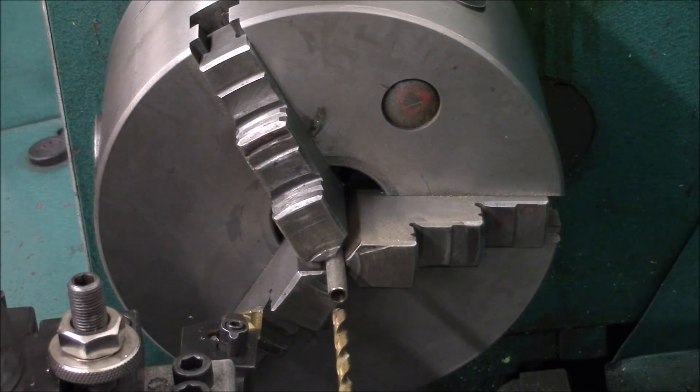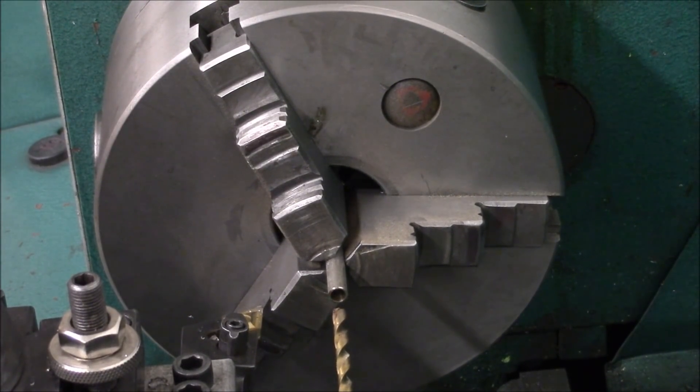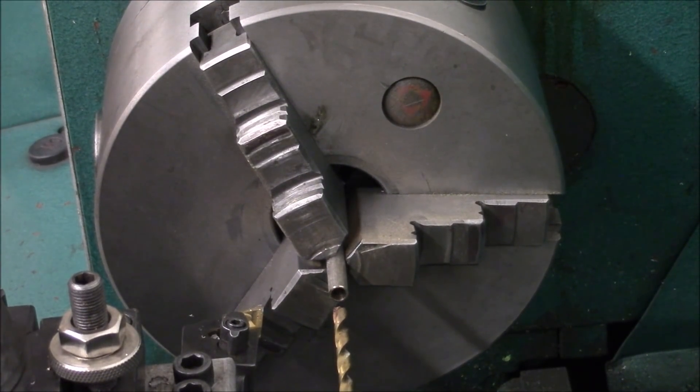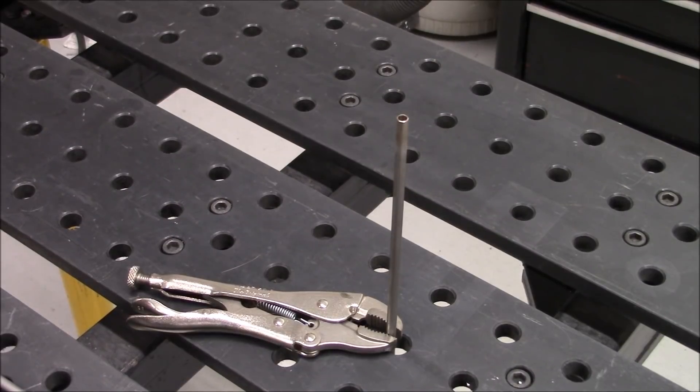You can see we got our hole in there to the final diameter that it needs to be. Now we're going to take it back over to the welding table and set it up to get the flux and solder on there and get the brush soldered into the end of it.